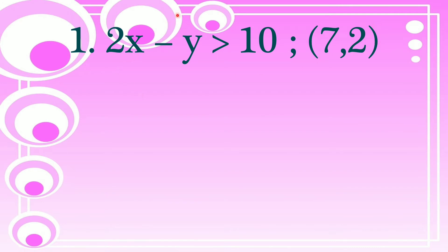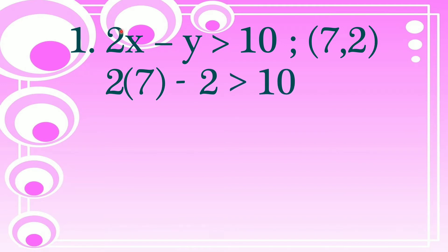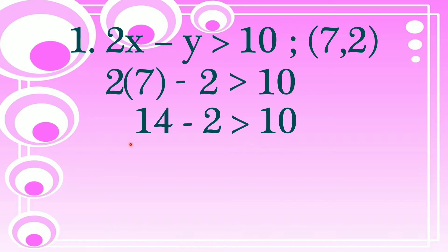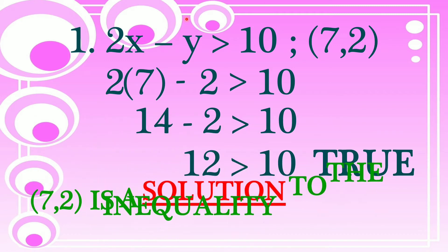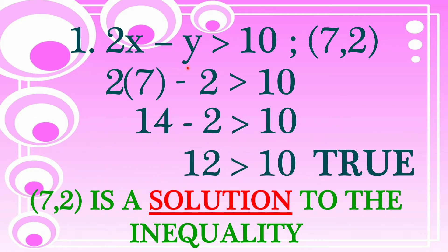We will substitute them into our inequality, replacing x and y. So 2 times 7 equals 14, minus 2 is greater than 10. So 14 minus 2 equals 12. Is 12 greater than 10? True or false? If it's true, it means it is a solution of our inequality. If false, it is not a solution. Since 12 is greater than 10, it is true. So (7, 2) is a solution of 2x minus y is greater than 10.